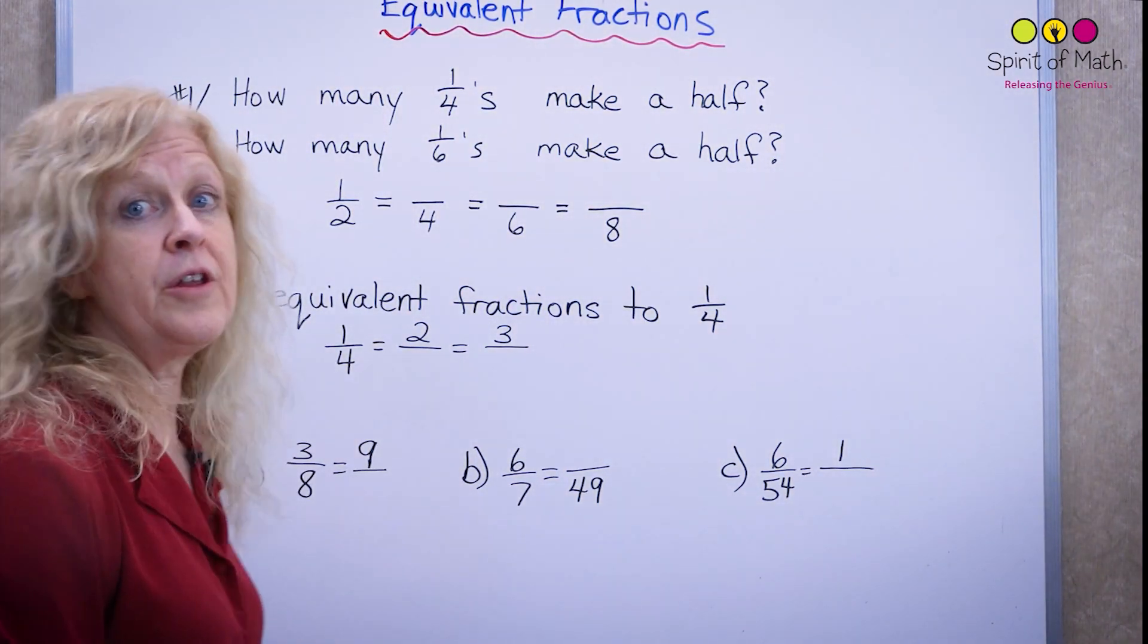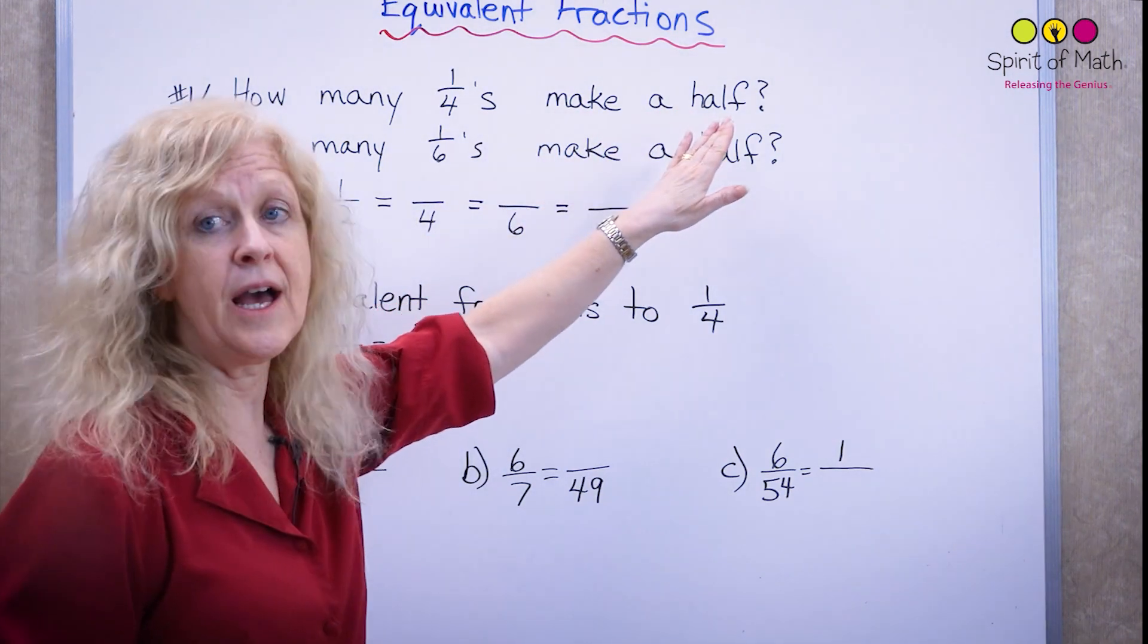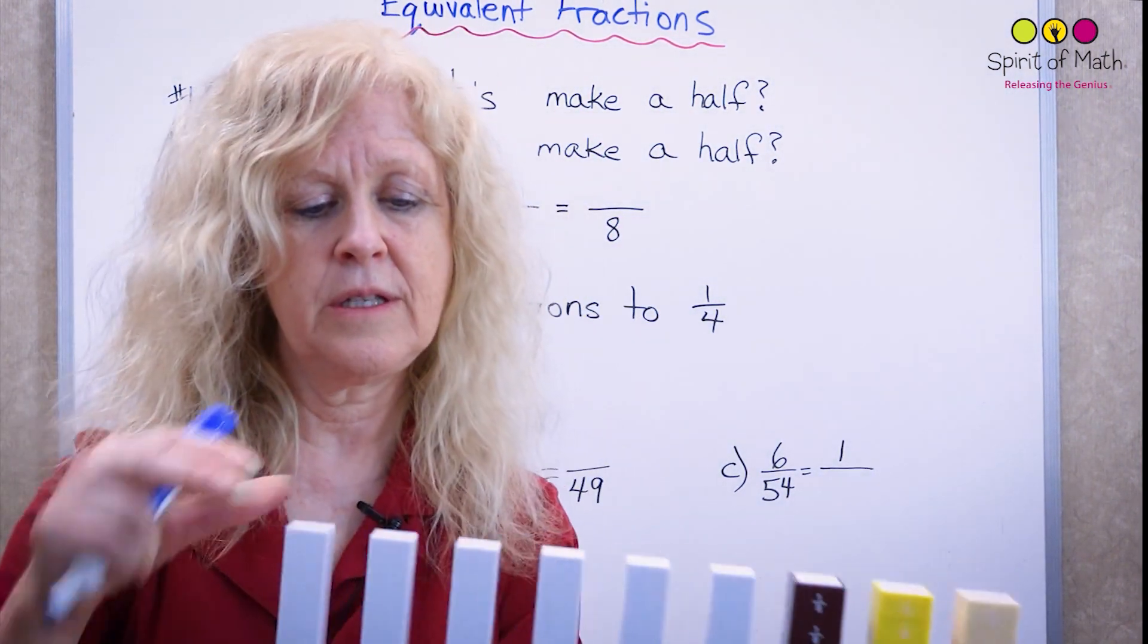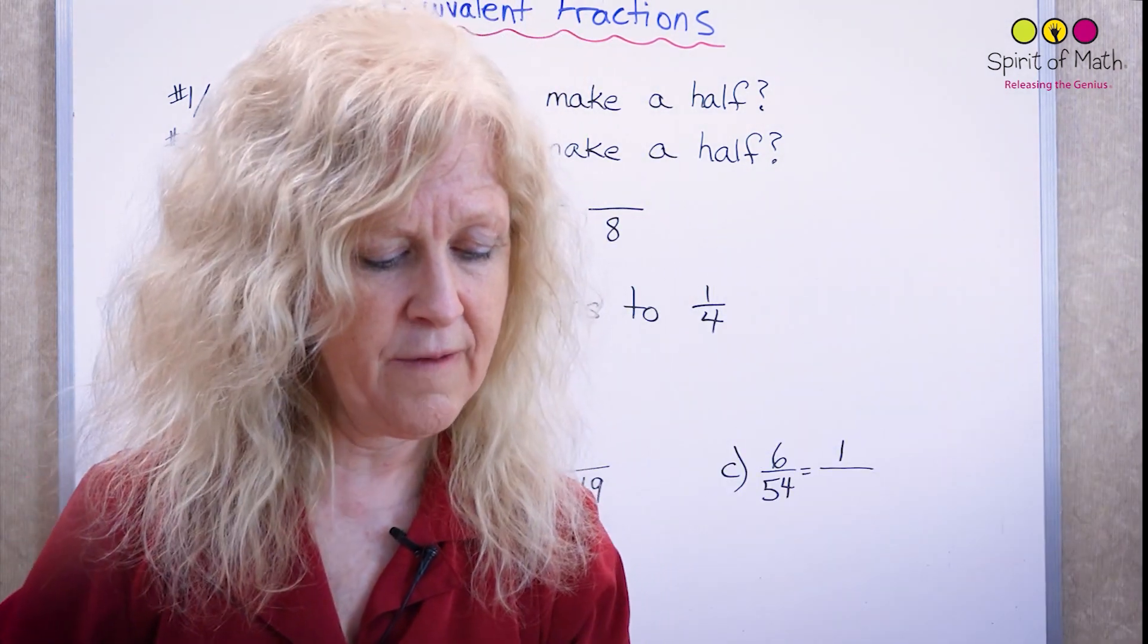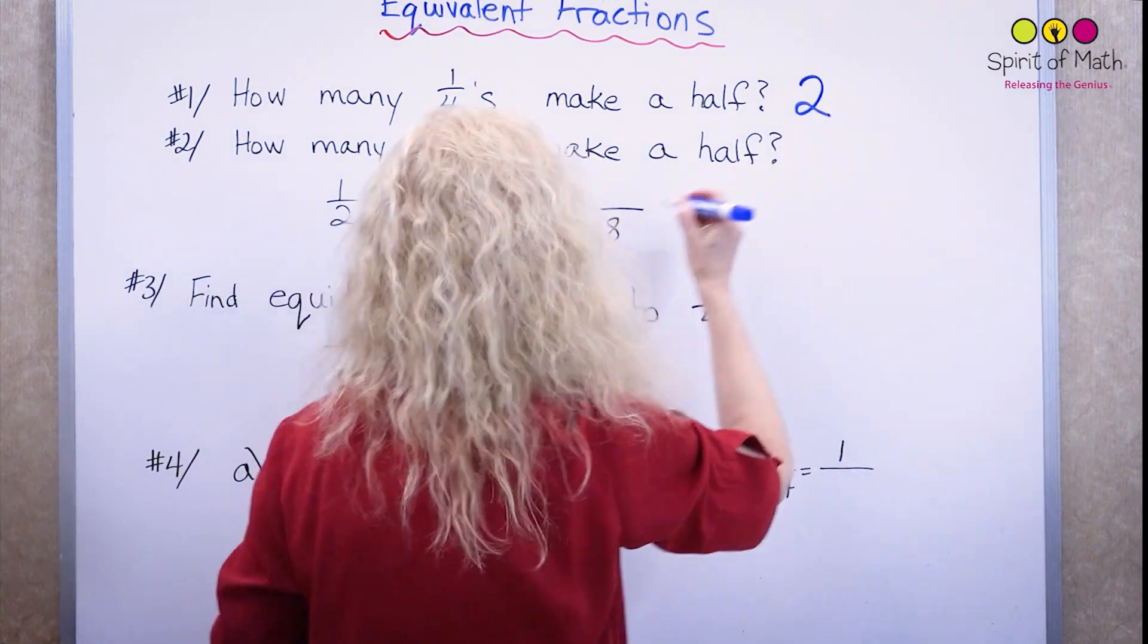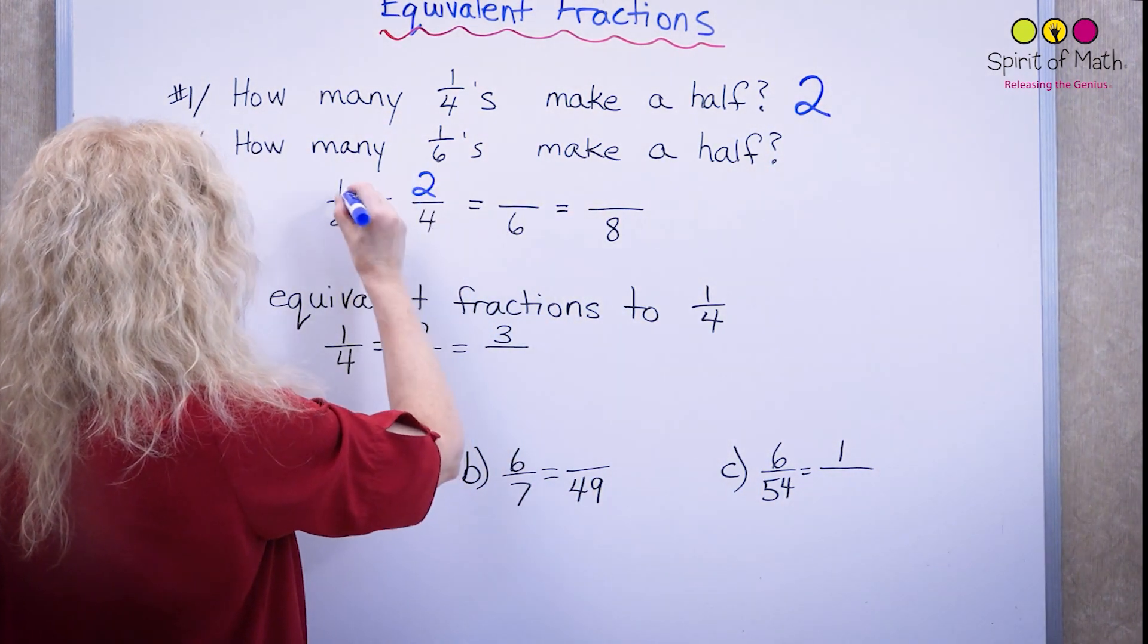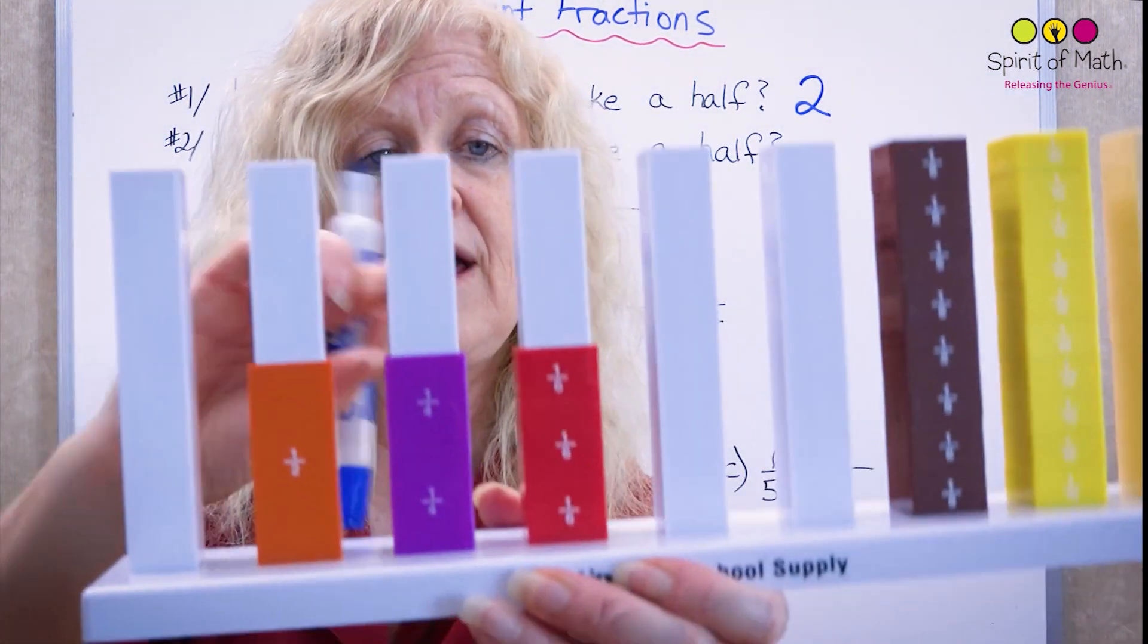So first of all, the very first question was, how many quarters make a half? Well, we saw that here that it was two quarters makes a half. So I'm going to write two. So one-half is equal to two-quarters.